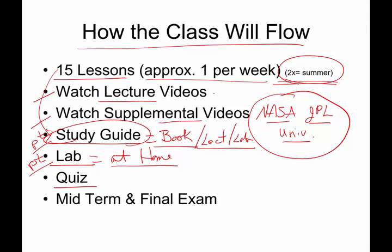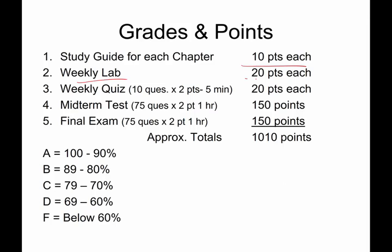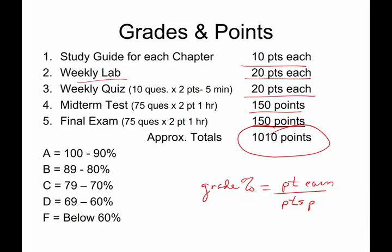There's going to be a weekly quiz, again for points, that's going to be totally online. And there is going to be a midterm and a final, also online. And all of these are how you're going to earn the points and your grade. The study guides are 10 points each. The weekly labs are 20 points each. The weekly quizzes are 20 points each. The midterm and the final are both 150 points each. It ends up with right around 1,000 points for the entire semester. And your grade is going to be a percentage of the points that you earn compared to the points possible. It's just as simple as that.